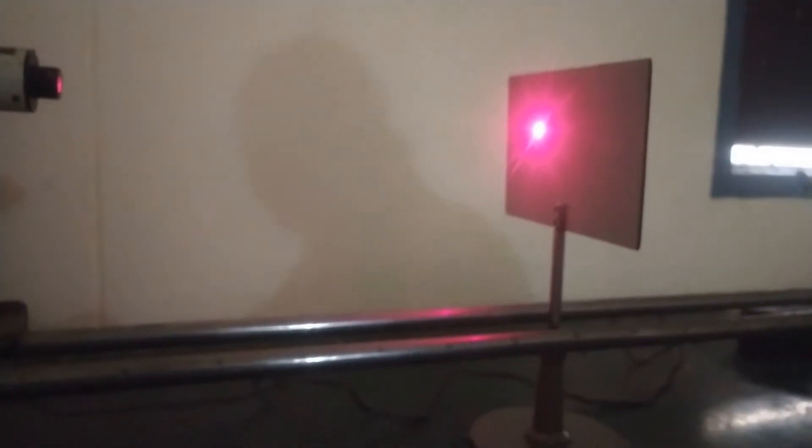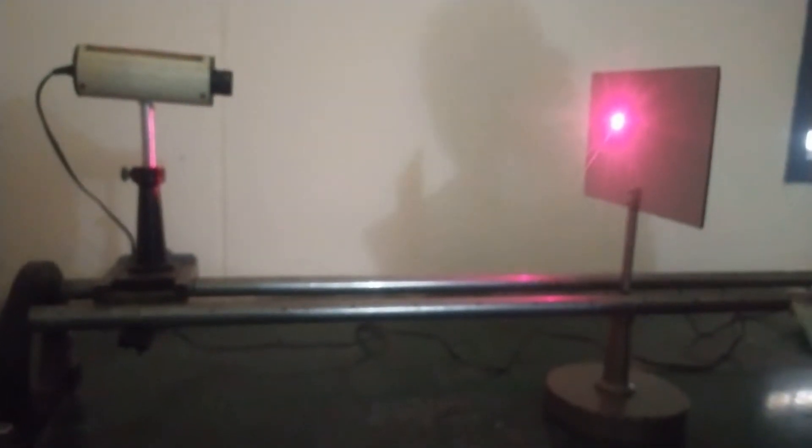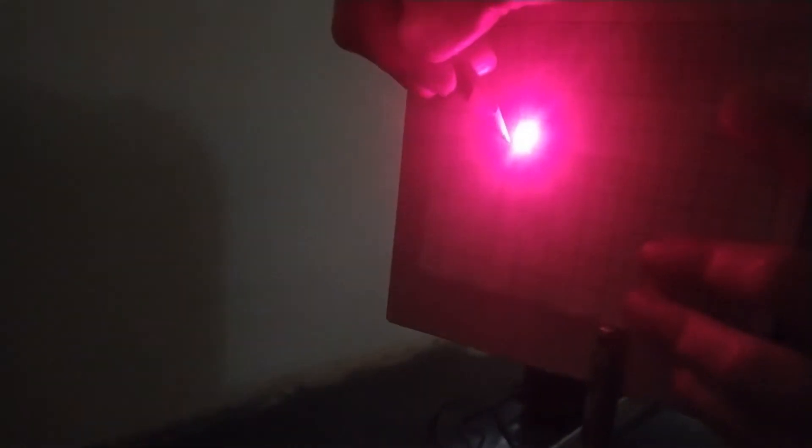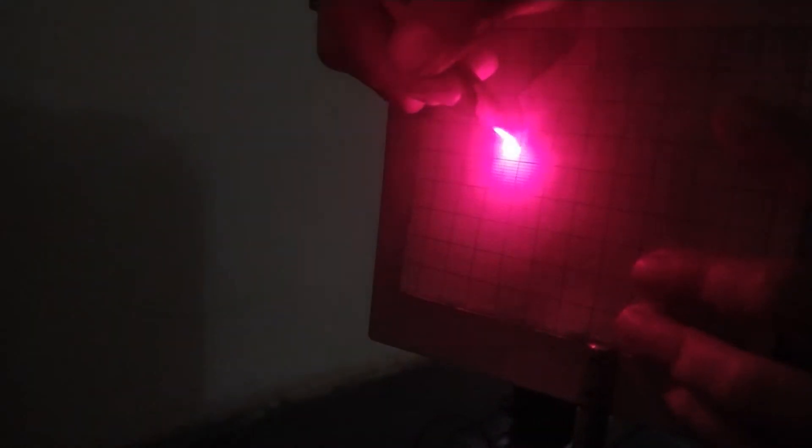For this experiment we have kept our laser at 0 cm and the screen at 40 cm. The distance between laser source and screen is 40 cm. We will place graph paper here and draw this circle.